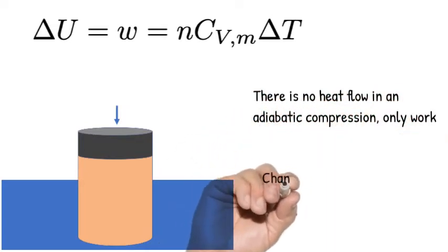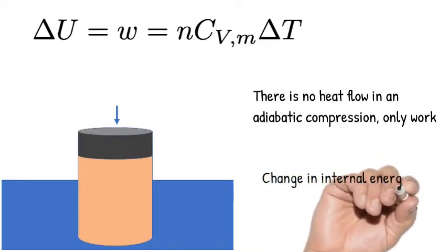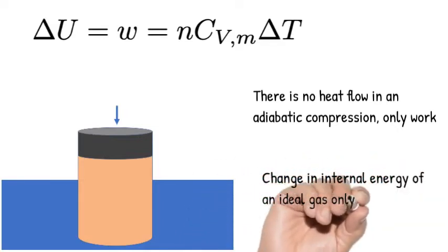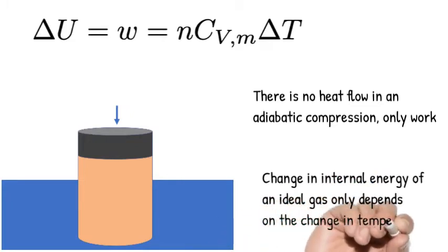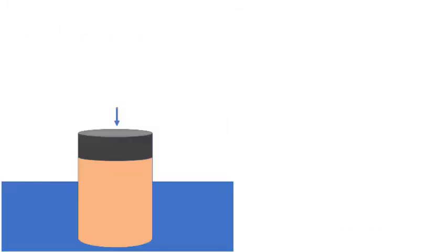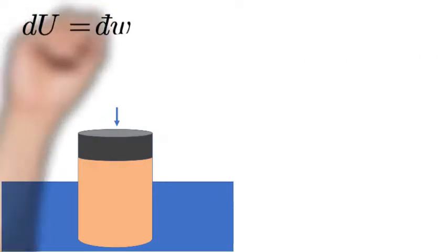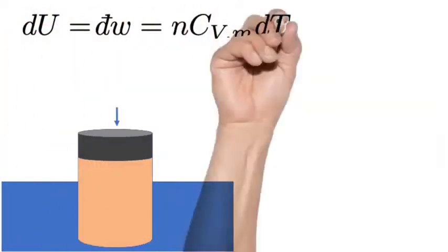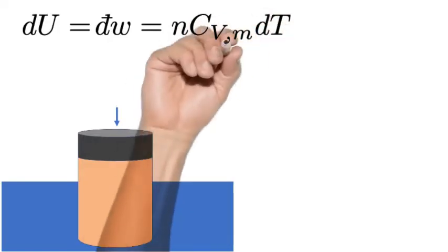We can also relate the change in internal energy to the change in temperature through the heat capacity because we're talking about an ideal gas. So we can talk about incremental changes in these quantities.